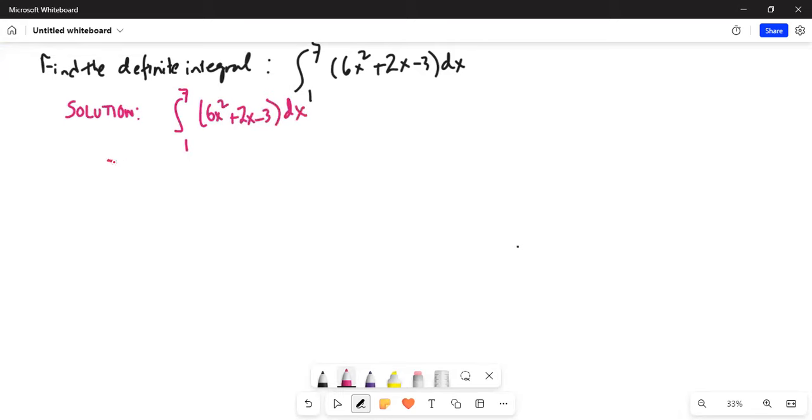This will be equal to integration of x square with respect to x is x to the power of 2 plus 1 is 3 divided by 2 plus 1, 3 plus 2x square, x 1 plus 1 is 2 divided by 2 minus 3x because integration of a constant is x, right?